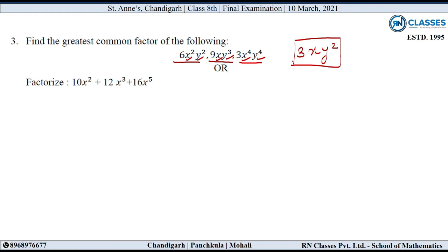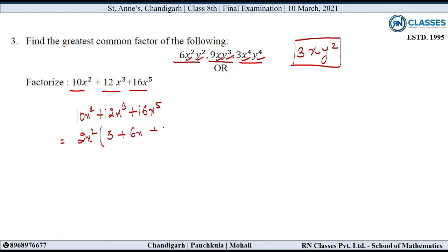अब इसका और part: factorize 10x square plus 12x cube plus 16x raised to the power 5. तो सबसे पहले हम देखते हैं कि इन तीनों terms में कुछ common है या नहीं। तीनों terms में common आ रहा है 2x square। तो अंदर बचा: 5 plus 6x plus 8x cube. तो यह होगी factorization complete.